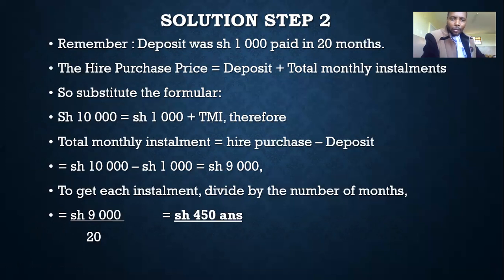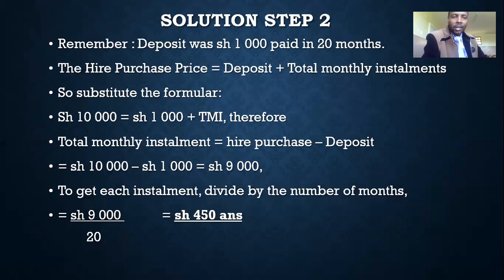From the original question, we were told this was paid in 20 months. So 9,000 was paid in 20 months. To know what she was paying each month, you just take the 9,000 — which represents the total monthly installments — and divide by the number of months, which gives you 450. Each installment, she was paying 450 shillings.